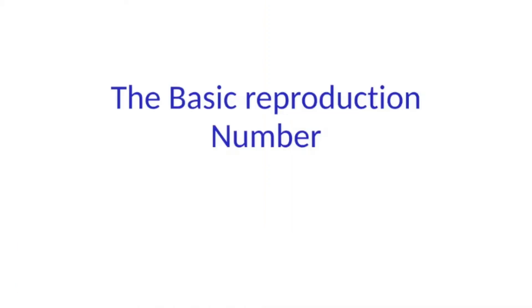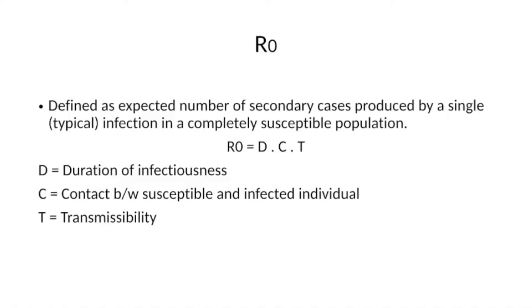Basic reproduction number, written as R0 and pronounced as R-naught, is defined as the expected number of secondary cases produced by a single typical infection in a completely susceptible population. The key assumption here is a completely susceptible population, and it gives the secondary cases produced by a single typical infection.